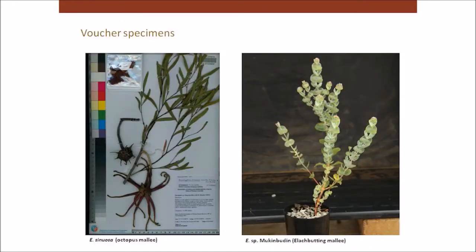At each site I collect seed from a single representative mother tree and also collect a voucher specimen — basically a specimen that's pressed and dried, with leaves, gum nuts, flower buds, and a label saying where it came from and information about the site. Then I grow seedlings. As well as growing seedlings to plant out at the arboretum, I also grow extra seedlings, pull them out of the pots, press them, dry them, and have a seedling specimen for each collection I've made.